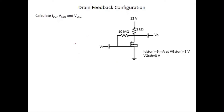Before we move to the AC analysis, I want to add another configuration for the DC analysis. This configuration hasn't been discussed yet — it was not covered in the previous class. This configuration is called a drain feedback configuration. You can see here: this is the drain and this is the gate, so between the gate and drain there is a feedback resistor connected.